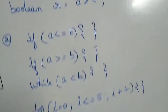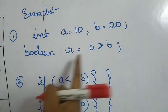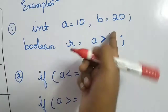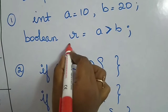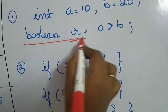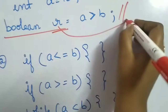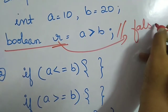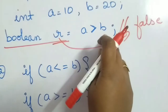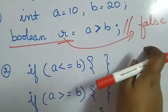We will see certain examples. I am declaring int a = 10 and b = 20. I want to compare whether a is greater than b or less than b. Since the result is of boolean type, I am saying boolean r = a > b. If I try to print r, the value of r will be false, because a is greater than b evaluates to false since a is less than b.